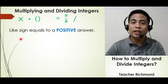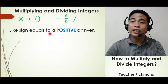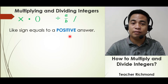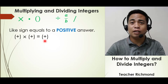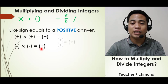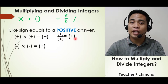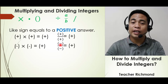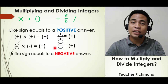These are the rules. We only have two rules in multiplying and dividing integers. For like signs, the answer will always be positive. For example, positive times positive is always positive, and negative times negative is always positive. When you divide positive by positive, the answer is positive, and negative divided by negative is also positive.